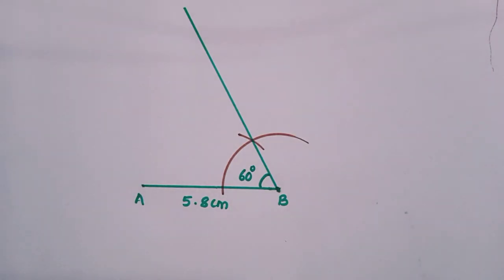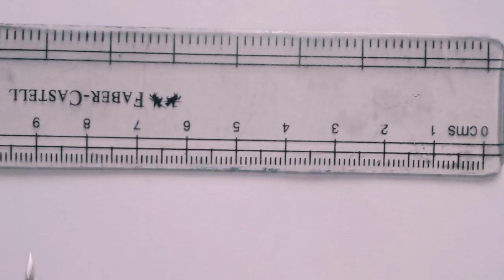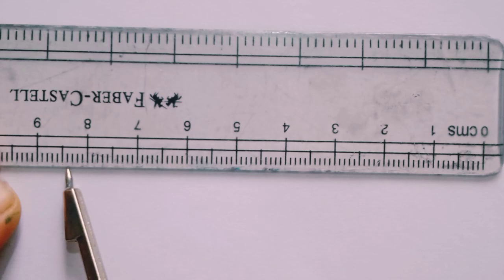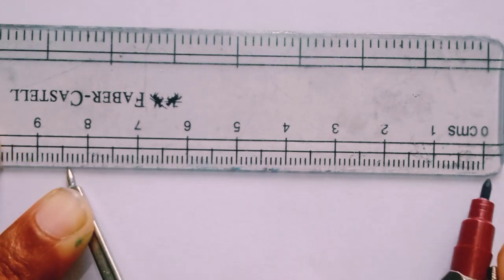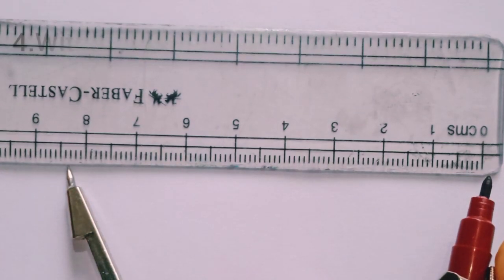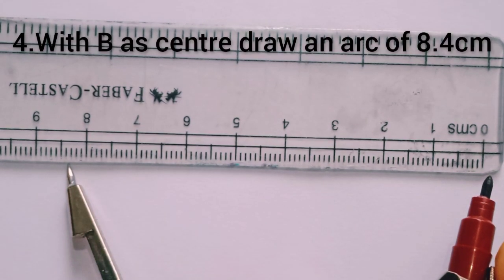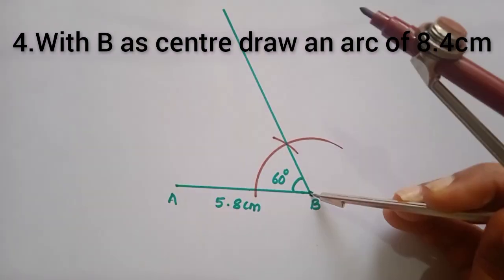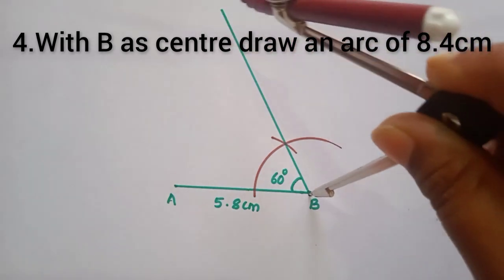Next step: it is given that BC plus CA equals 8.4 centimeters. Take out your scale and measure 8.4 centimeters — make sure the needle point is from zero. Now draw an arc of 8.4 centimeters with B as center and mark the point.